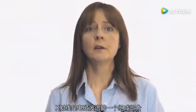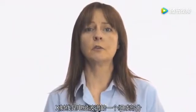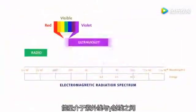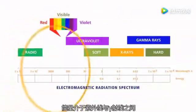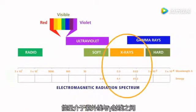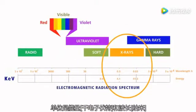X-rays form part of the electromagnetic spectrum. They are on the high energy side of ultraviolet and are expressed in terms of their energy in kilo electron volts or wavelength in nanometers.